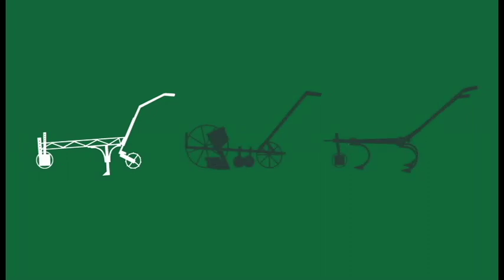The ripper, like a plow, is used to prepare the ground for planting. Unlike a plow, a ripper doesn't invert the soil, but instead breaks a line through it.